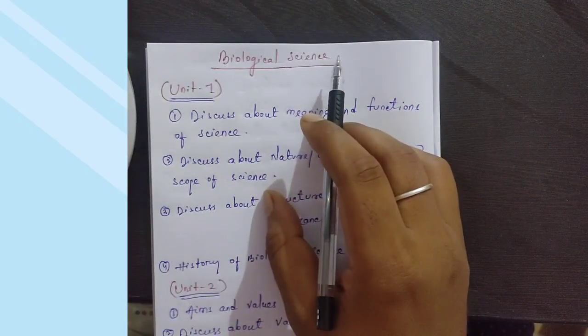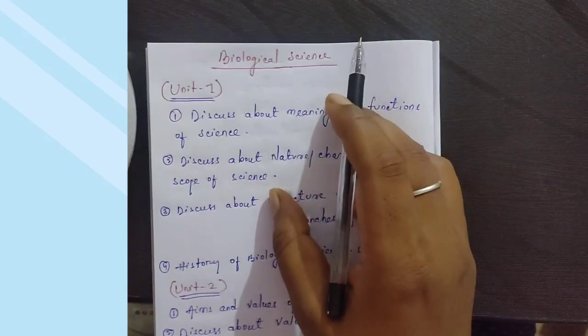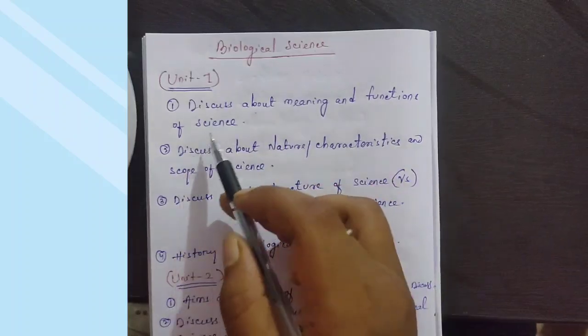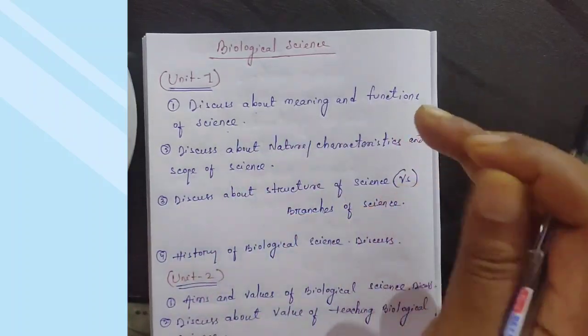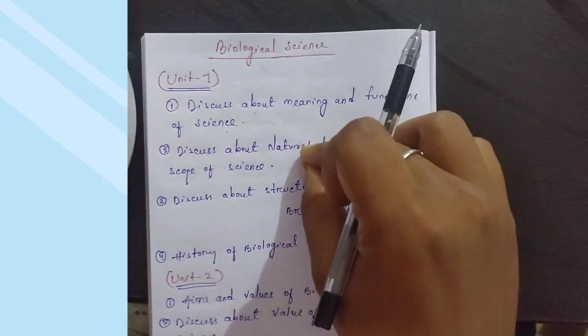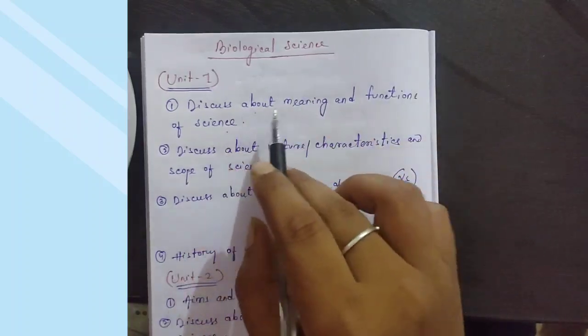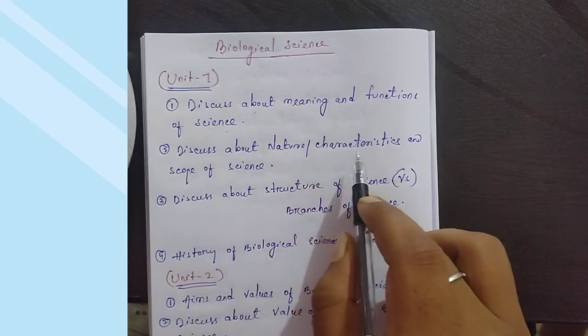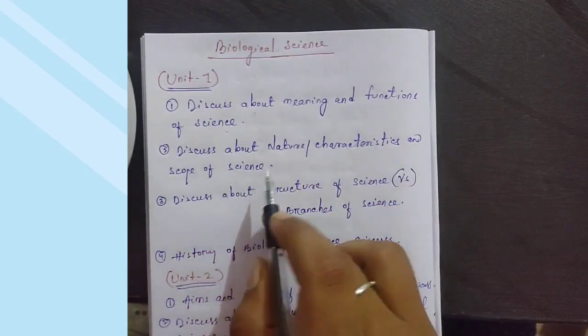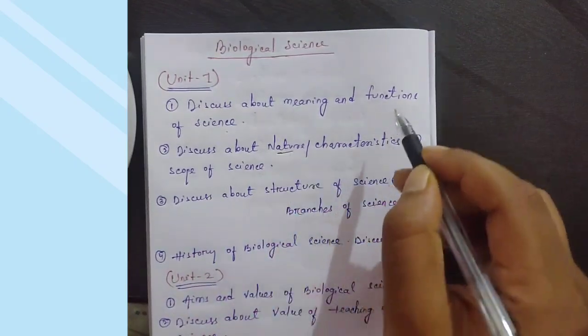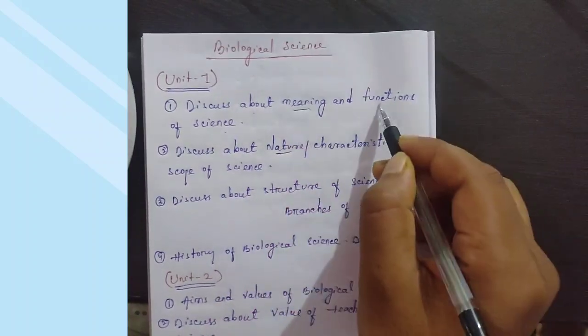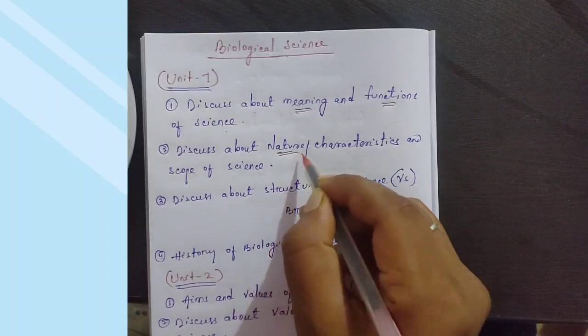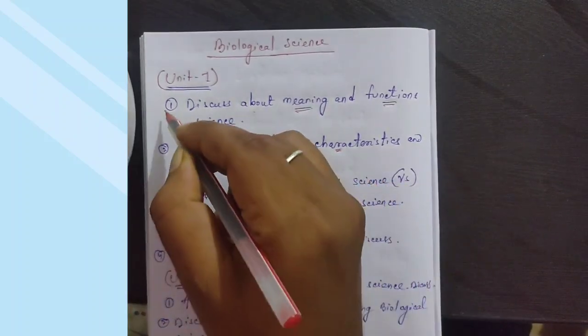This is for biological science, and I'll also upload physical science and mathematics later. Unit 1: First question - discuss the meaning and function of science. Biological science Unit 1 is completely about science. Second question - discuss the nature, characteristics, and scope of science. The meaning and function of science are covered separately from the nature, characteristics, and scope.